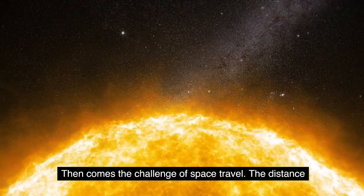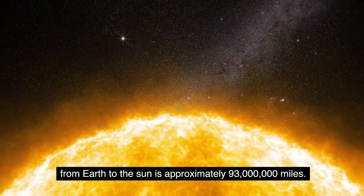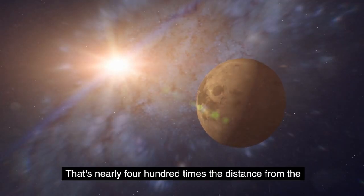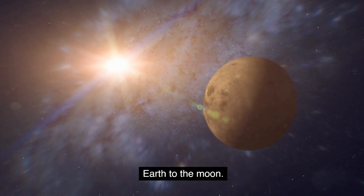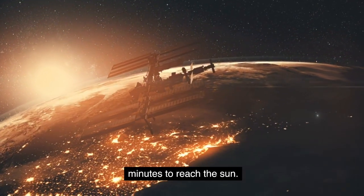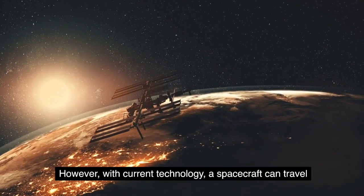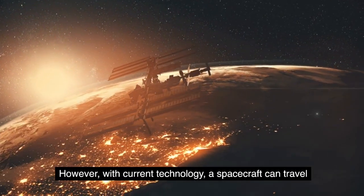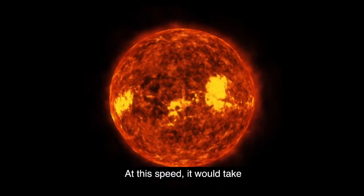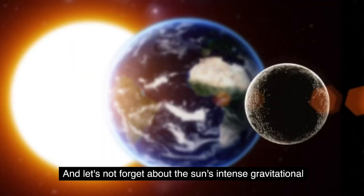Then comes the challenge of space travel. The distance from Earth to the sun is approximately 93 million miles. That's nearly 400 times the distance from the Earth to the moon. Even at the speed of light, it would take around 8 minutes to reach the sun. However, with current technology, a spacecraft can travel at about 56,000 miles per hour. At this speed, it would take around seven months to reach the sun.